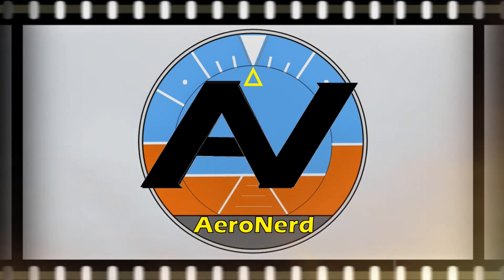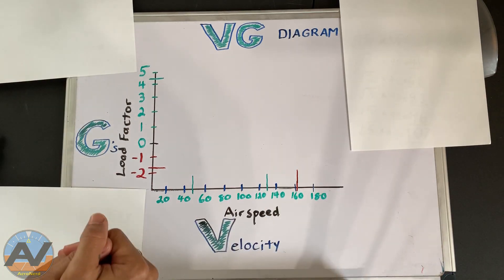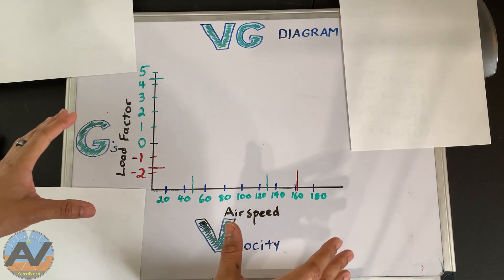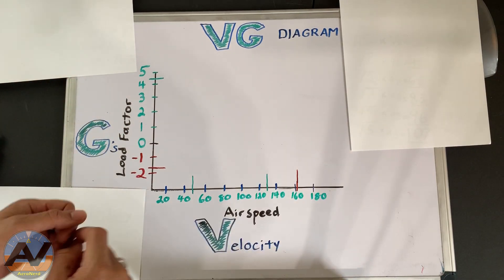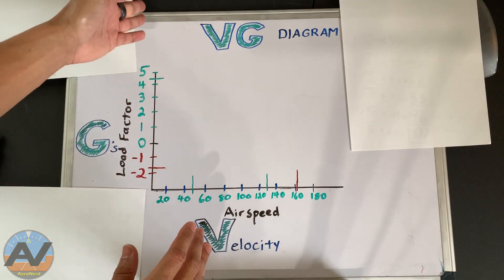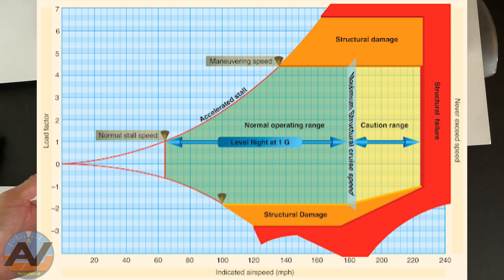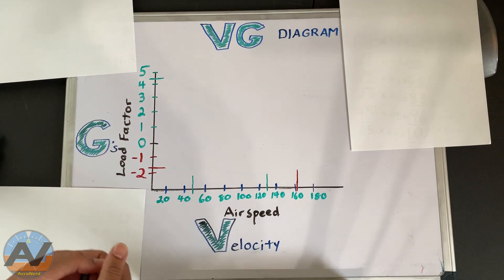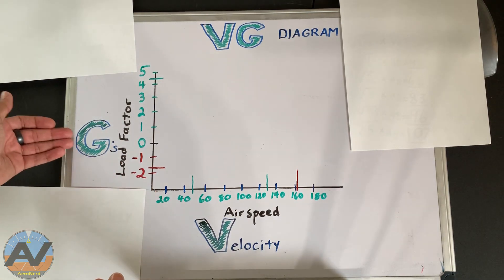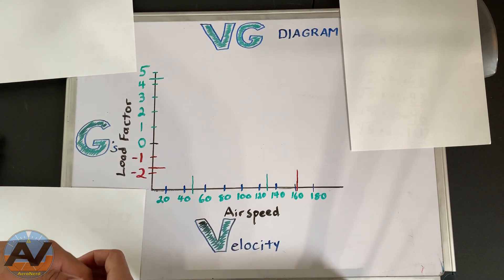Okay, so here we go from scratch. What do we need in order to get a VG Diagram from scratch? First of all, what is the VG Diagram? What does it stand for? If you look in the P-Hack, on the Y-axis you're going to see load factor, and on the X-axis you're going to see airspeed. Airspeed is velocity, and load factor is actually the Gs. So if you have your velocity and your Gs, you've got your VG Diagram - that's where the name comes from.